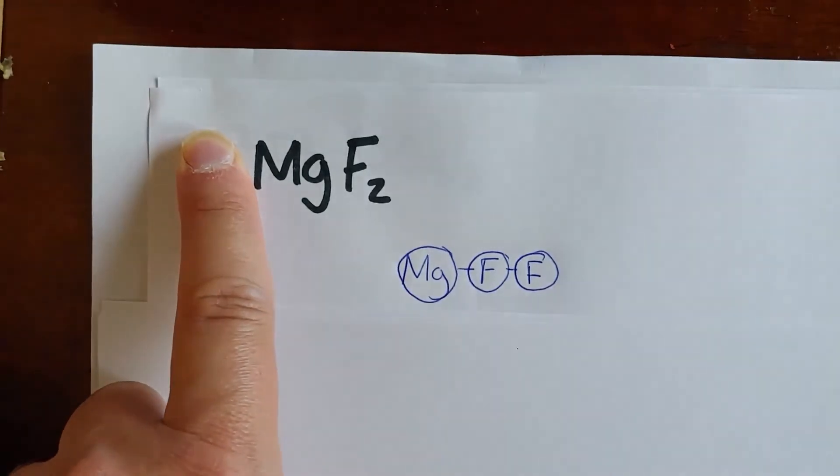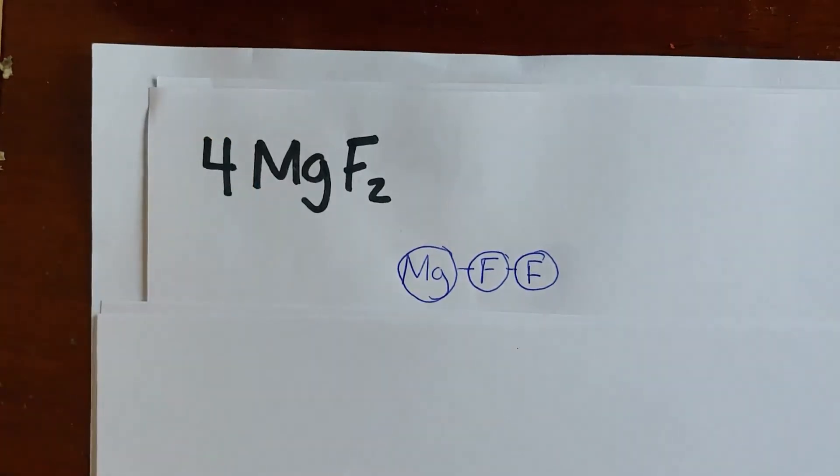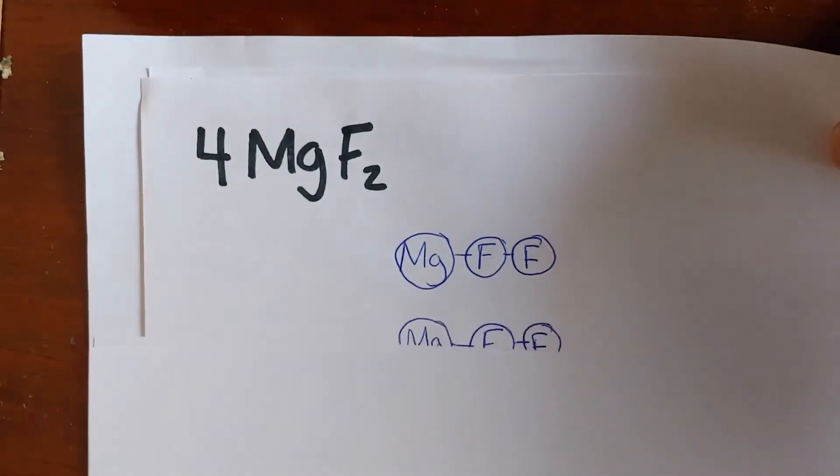So this would be MgF2, right? One magnesium with two fluorine atoms. Then we uncover the coefficient. That coefficient is a 4, which says take this molecule, MgF2, and get four sets of it, four copies. So we'll do that. One, two, three, four.